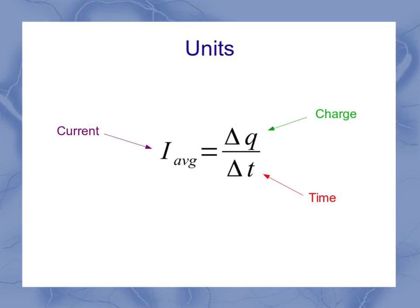So now in terms of units, my charge is measured in coulombs. My time is measured in seconds. And so that means I've got a coulomb per second as my unit for current, excuse me. See, we've got too many C's in here.